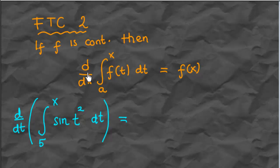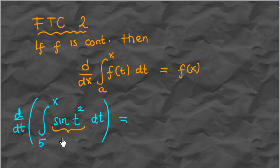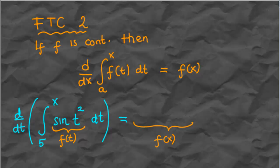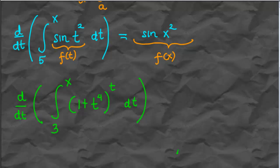The fundamental theorem of calculus says that the derivative of this function is simply that integrand with the x variable. So here sin(t²) is our f(t). Then our f(x) is simply the same function with the x variable, which gives sin(x²).